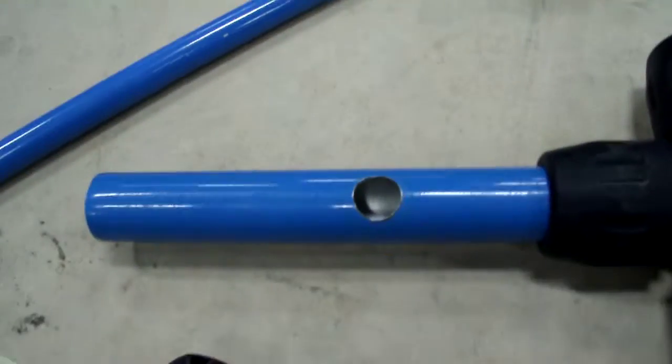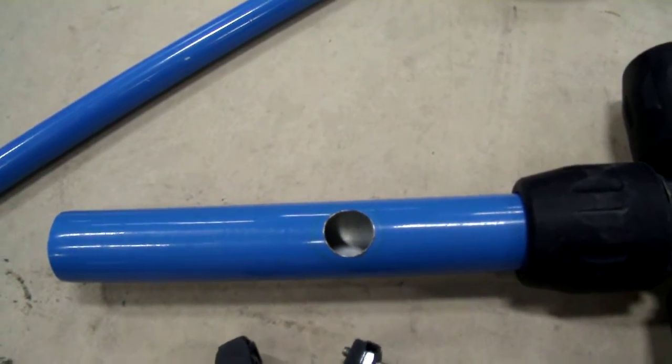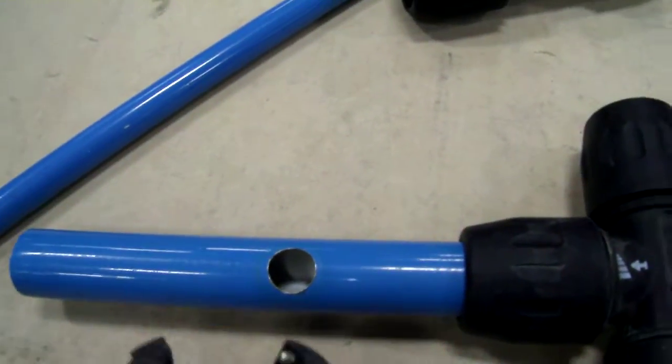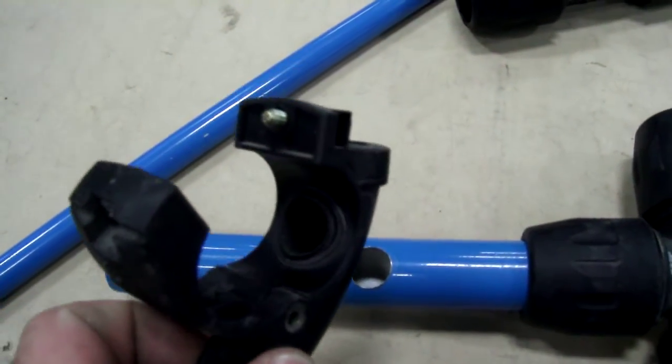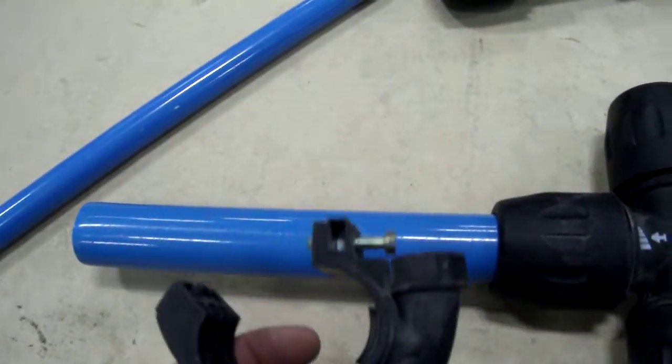What it is, is you drill a hole right here wherever you want a drop at. And then you have this that clamps around it with an O-ring right here.